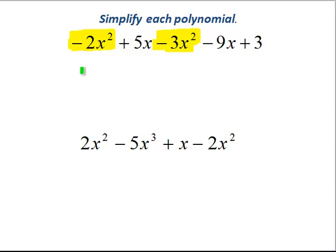Now I'm going to use a different highlighter to identify the next set of terms. So here I have a plus 5x, and then I have a minus 9x. Now we see that all that's left is this 3, and there's nothing to combine it with.